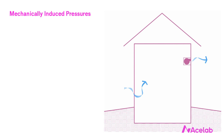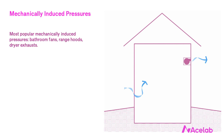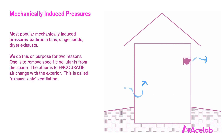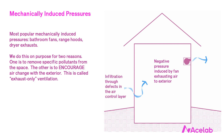The third way to create pressure differences in buildings is to mechanically induce them. The most common sources are bathroom fans, range hoods, and dryer exhausts. We create these pressures on purpose for two reasons: to remove specific pollutants from the space, and to encourage air change with the exterior — this is called exhaust-only ventilation. It works by using a fan to exhaust air from a space, which causes the space to become negatively pressurized, inducing infiltration through defects in the air control layer to compensate. Air out equals air in.